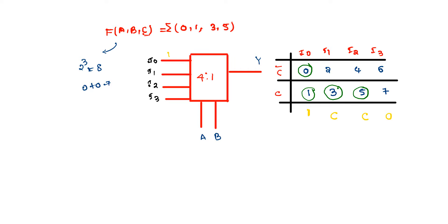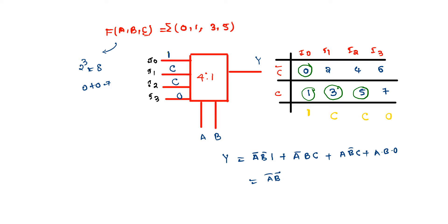So in place of I0 = 1, and for the input with C and C-bar values just determined, we can now write the mathematical expression. The final output expression becomes: A-bar·B-bar·(1) + A-bar·B·C + A·B-bar·C + A·B·(0), which simplifies to: A-bar·B-bar + A-bar·B·C + A·B-bar·C. This is your final expression derived from the given function.